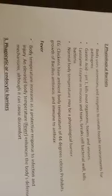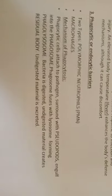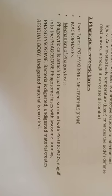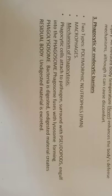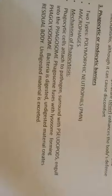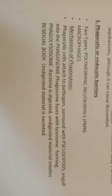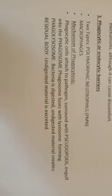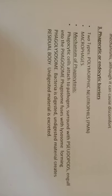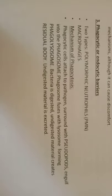Now let's go into the endocytic and phagocytic barrier. There are two types: polymorphonuclear neutrophils and macrophages. The phagocytic mechanism works as follows: the phagocytic cell attaches to the pathogen, surrounds it with pseudopods, and engulfs it into a phagosome. The phagosome then fuses with a lysosome to form a phagolysosome. The bacteria is digested, undigested material creates a residual body, and that indigestible material is then excreted.